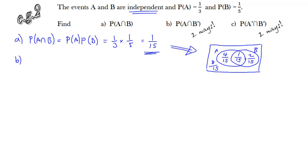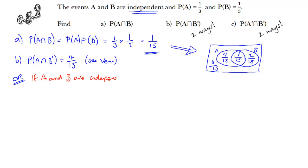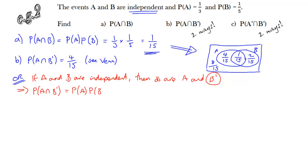For Part B: the probability of A intersection not B. From the Venn diagram, this is the region in the loop for A but not B — that's the region labeled 4/15. The Venn diagram is very helpful. But we're asked to do it two ways, so let's consider the alternative method: if A and B are independent events, then A and not B are also independent. So we can apply the same formula — multiply the probability of A by the probability of not B. Not B is 4/5 because P(B) is 1/5. Multiplying gives the same answer of 4/15.